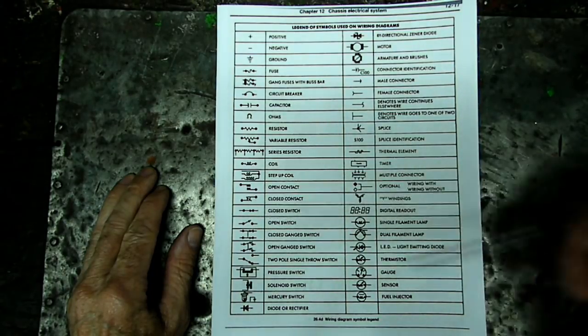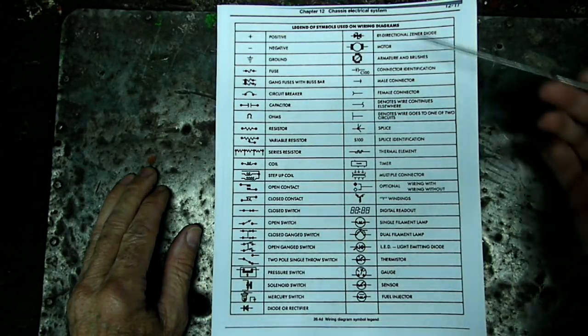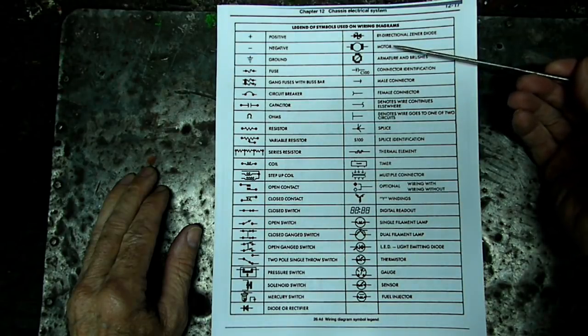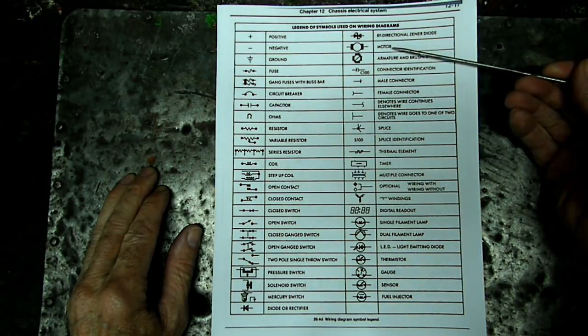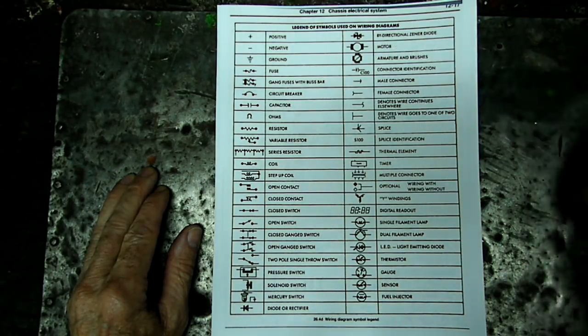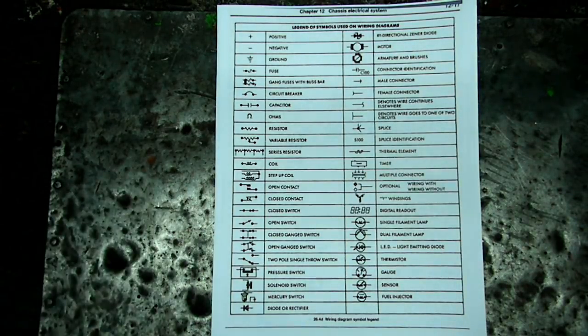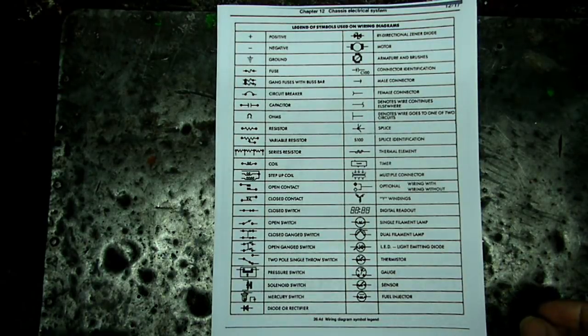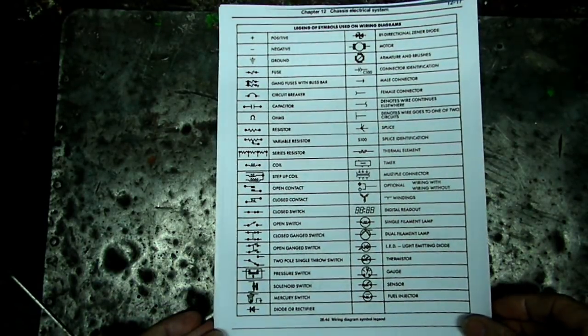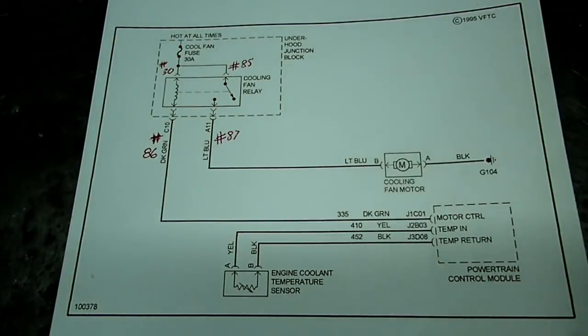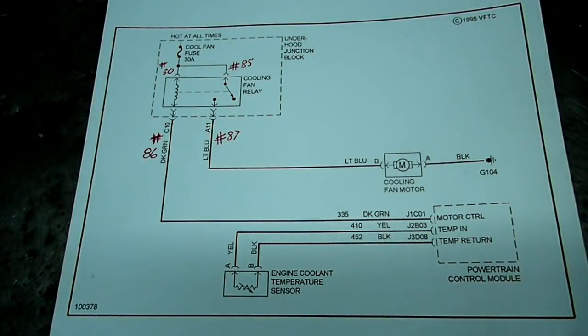These are ones you'll see quite regularly: coil, switch symbols, up here we have the motor symbol right here. Those are the most common ones you'll see. Now, let's take a look at a normal wiring diagram. Here is a wiring diagram on a cooling fan system.